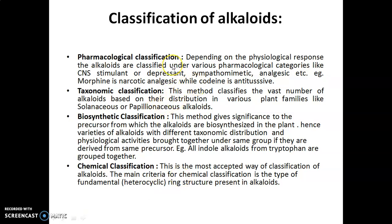Now let us see the classification of alkaloids. We can classify alkaloids in different ways: pharmacological classification, taxonomic classification, biosynthetic classification, and chemical classification. Depending upon the physiological response, alkaloids are pharmacologically classified under categories like CNS stimulant, CNS depressant, sympathomimetic, analgesic, antidiarrheal, miotics, and antitussive. For example, morphine is a narcotic analgesic and codeine is antitussive.